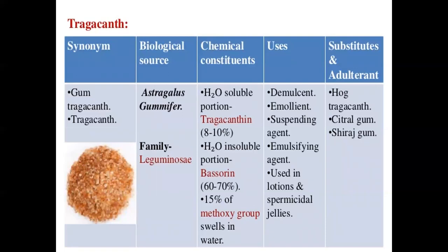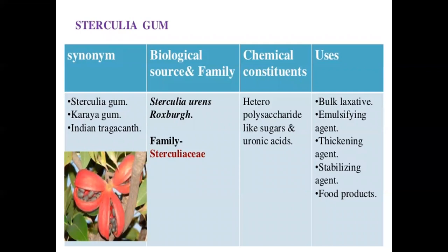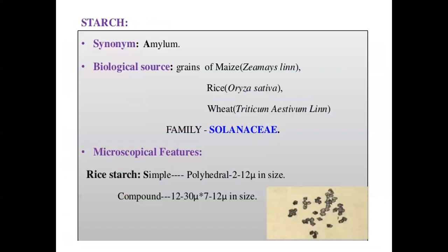Next is sterculia gum, also called karaya gum or Indian tragacanth. It is a dried gum exudation obtained from Sterculia urens, family Sterculiaceae. It contains carbohydrates/polysaccharides — heteropolysaccharides are present, along with sugars and uronic acids. It is used as a bulk laxative, emulsifying agent, thickening agent, stabilizing agent, and in food industries.